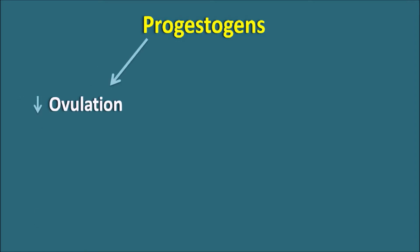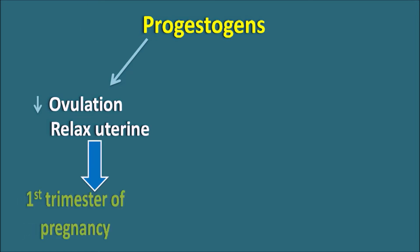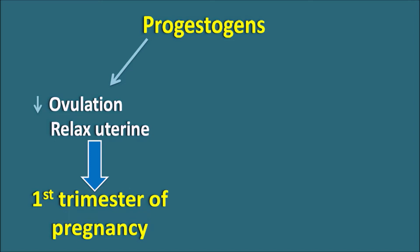Progestogens are one type of hormone which can be used in two different situations. Within women after fertilization of the egg, progestogens can decrease ovulation as well as they can produce relaxation of the uterine, which can preserve the fertilized egg. That's why these progestogens can be given in the first trimester of pregnancy in order to preserve the pregnancy.